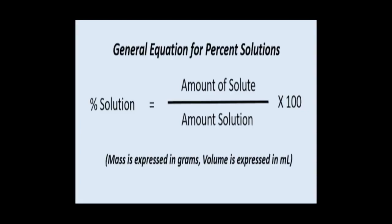For the general equation for percent solutions, there are three types: weight by weight, weight by volume, and volume by volume. The formula is: amount of solute divided by amount of solution, multiplied by 100. If we get mass by mass, we express it in grams; if we get volume, we express it in milliliters.